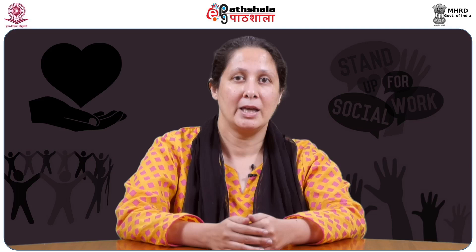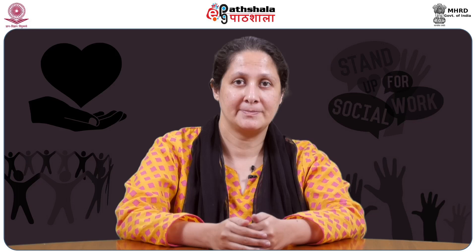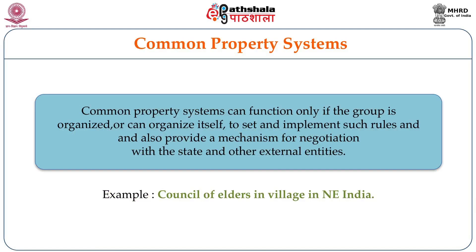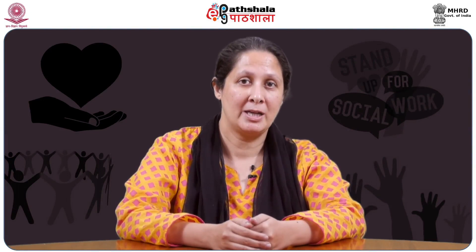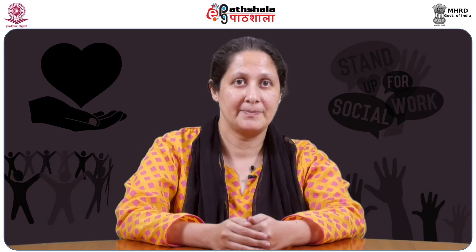Institutions set the rules to govern use and monitor as well as enforce them. We have looked at different types of rights, different categories of users and the nature of their rights. Common property systems can function only if the group is organized or has the ability to organize itself to implement the rules. It is also a mechanism by which they can negotiate with the state and other external entities. An example of this is seen in North East India, where village councils are the supreme decision-makers about village lands and can negotiate with state and national governments because they have separate rights on communal tribal lands.